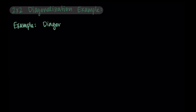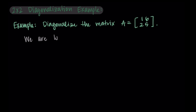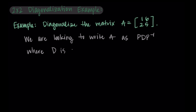So let's diagonalize the matrix A, where A is 1, 6 in the first row and 2, 5 in the second row. As part of diagonalizing this matrix, our whole goal is to write A as a different product of matrices, specifically P times D times P inverse. What makes this diagonalizing is that D is a diagonal matrix.